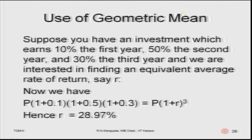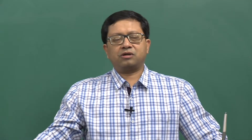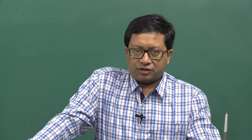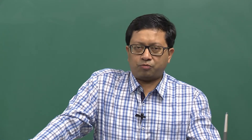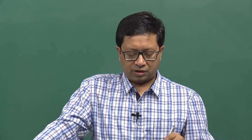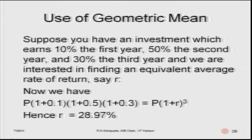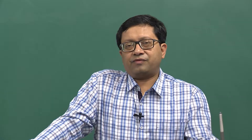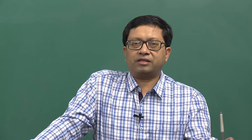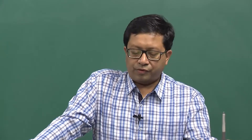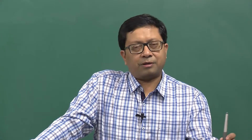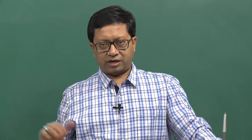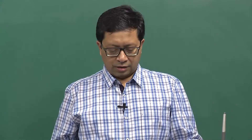For the geometric mean example: suppose an investment earns 10% in the first year, 50% in the second year, and 30% in the third year. We want to find the equivalent average return R. If P is the principal, after year one you get P×(1+0.1), multiplied by (1+0.5) for year two, and so on. Setting this equal to P×(1+R)^3 and solving, R comes out to be 28.9%.